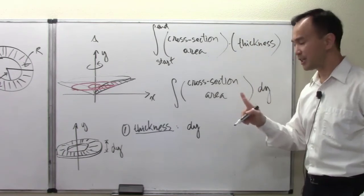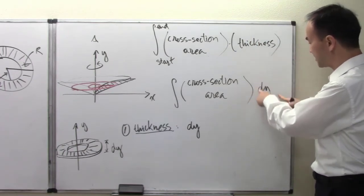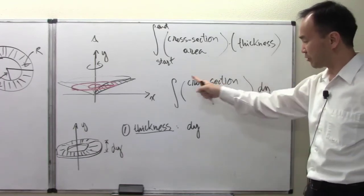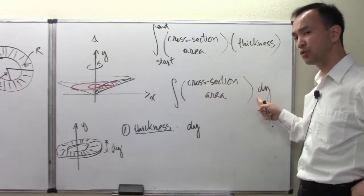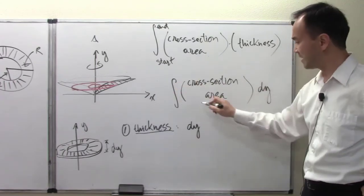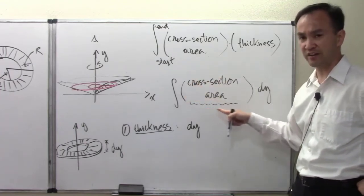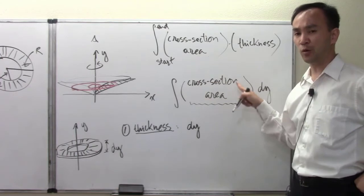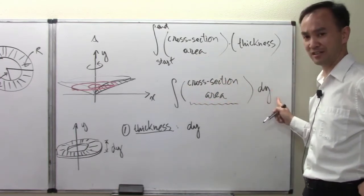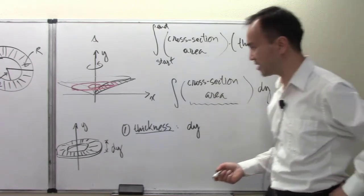Because the thickness is dy, the differential expression in our integral is dy. This tells us consequently that the cross-section area must be expressed as a function in terms of y as the main variable.